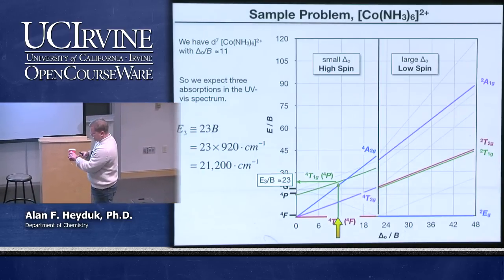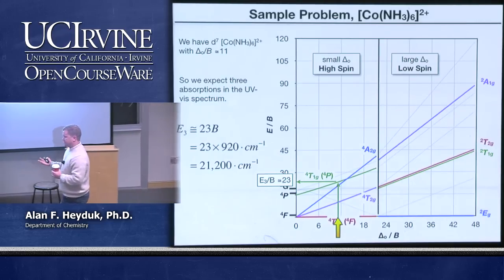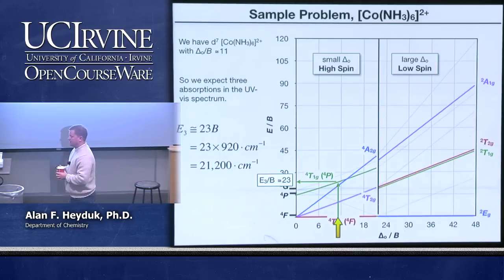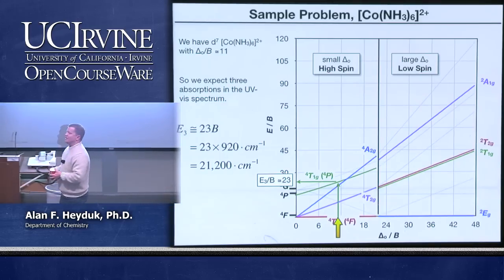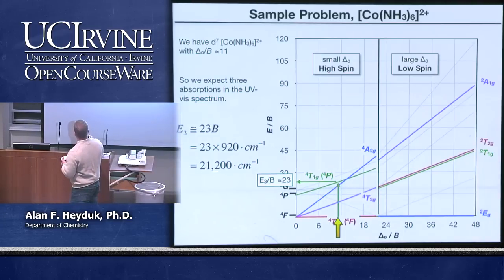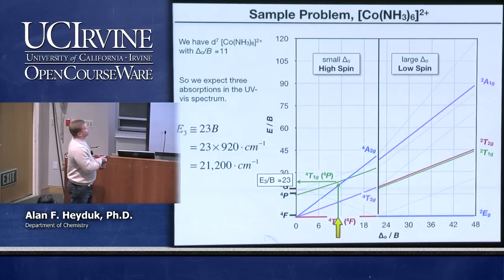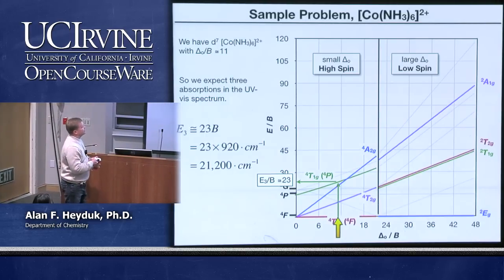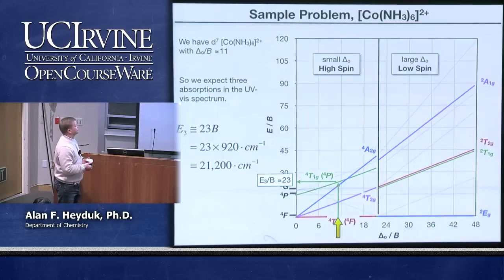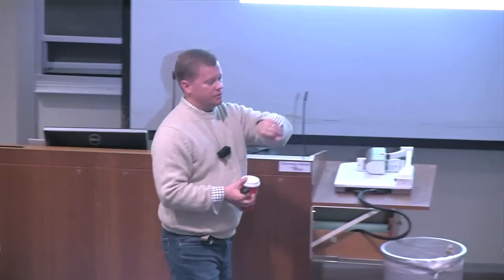So we've seen how to go through and calculate the presence of three transitions based on the Tanabe-Sugano diagram and estimate the energy at which they appear. You can correlate those to the appropriate electronic states. We will stop here, cover Jahn-Teller distortions on Friday along with electron counting. Have a great day.